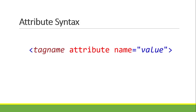This is the attribute syntax. Inside our start tag, we place our attribute. So: tag name, then attribute name is equal to, quotation marks, and then the value. Remember that this should always be inside the start tag.